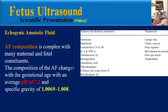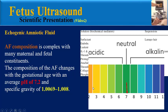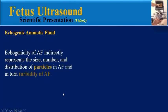The composition of the amniotic fluid changes with the gestational age, with an average pH of 7.2 and specific gravity in a determined range.